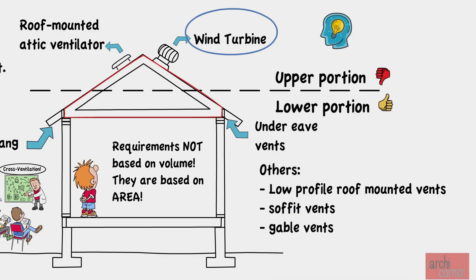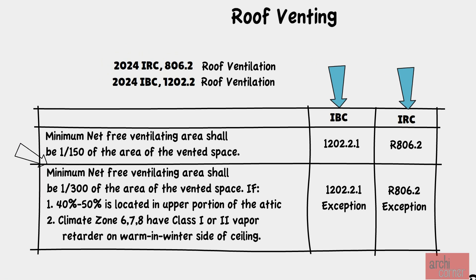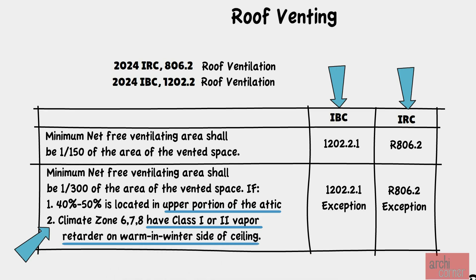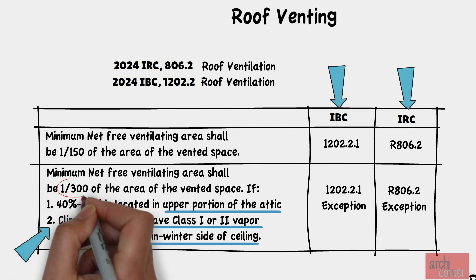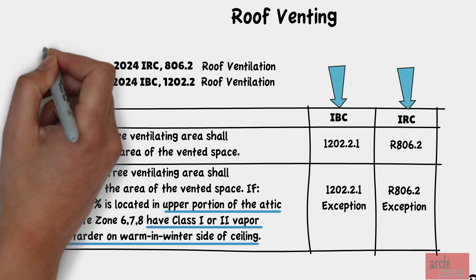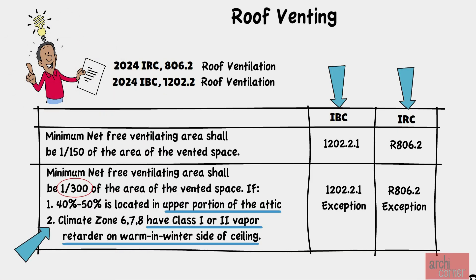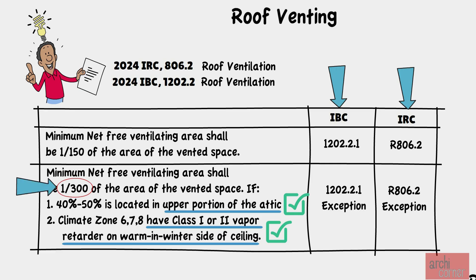Before doing calculations for wind turbines, let's talk about the second option. There is an exception in the IBC and IRC that states that if 40% to 50% of the venting is located in the upper portion of the attic, and if you are in climate zone 6, 7, or 8 and provide a class 1 or 2 vapor retarder on the warm winter side of the ceiling, you can reduce the venting area requirement to only 1/300th of the area of the vented space — half of the requirement compared to option 1.